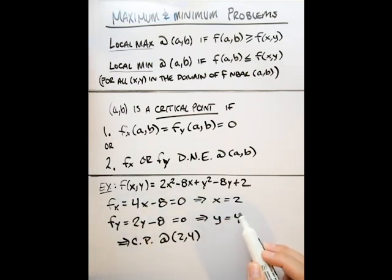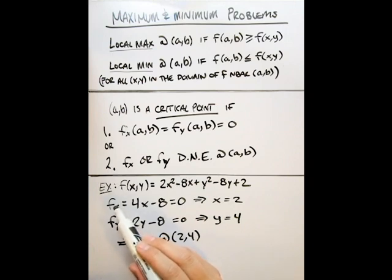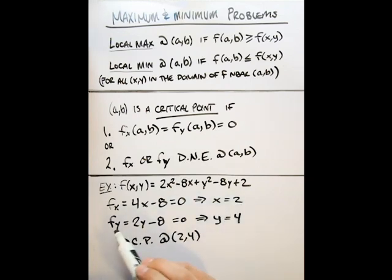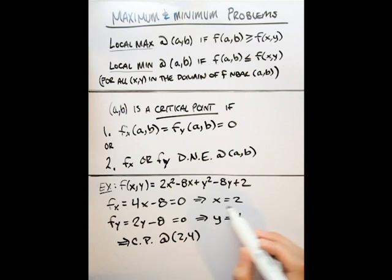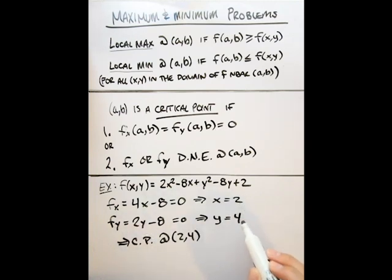If you have a function where solving the partial derivatives for 0 gives more than one x or y value, you take the x values from f_x, plug them into the partial derivative with respect to y, and see which x values correspond to which y values.